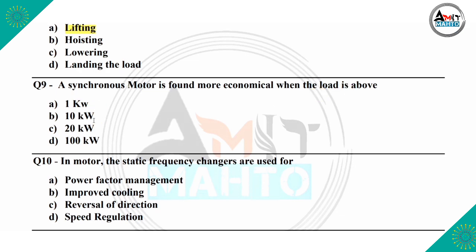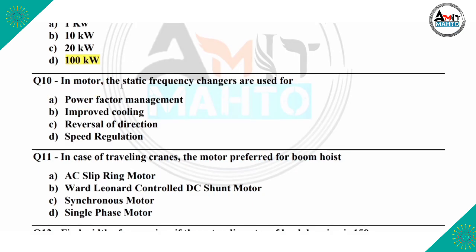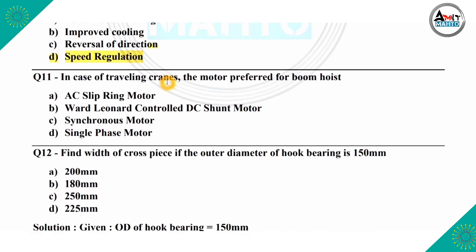The correct option is option D, which is 100 kW. The next question is: in a motor, static frequency changers are used for power factor management, improved cooling, reversal of direction, or speed regulation. The correct option is option D, which is speed regulation. In the case of a traveling crane, the motor preferred is AC slip ring motor, Ward-Leonard controlled DC shunt motor, synchronous motor, or single phase motor. The correct answer is option A, which is AC slip ring motor.